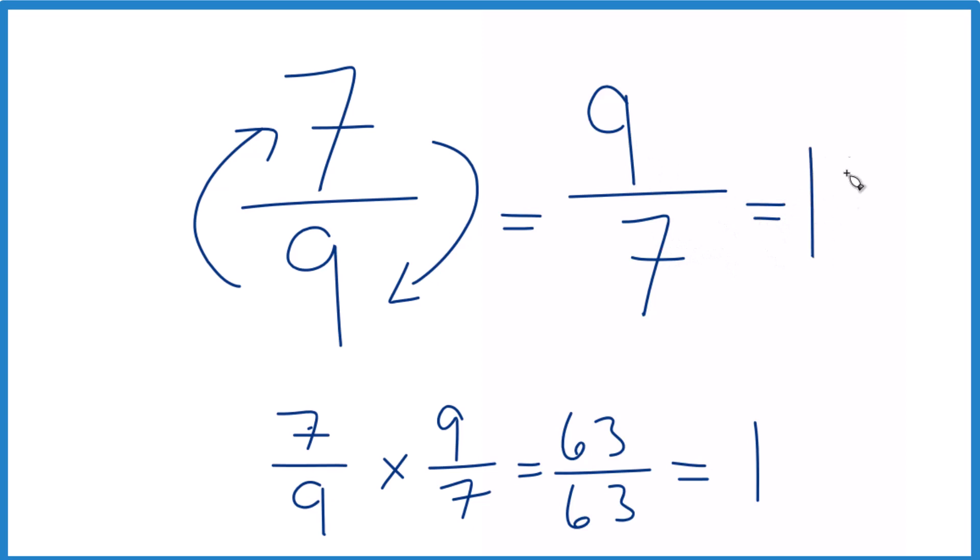Seven goes into nine one time with two left over, and we just carry the denominator across. So we could also call nine-sevenths the mixed number one and two-sevenths.